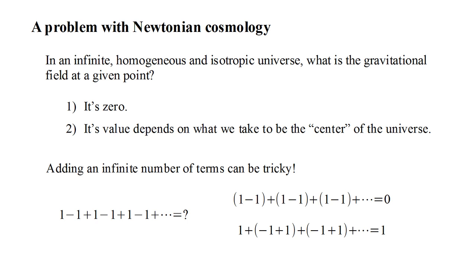Likewise, Newtonian theory does not converge on a unique answer for the gravitational field at a point in an infinite homogeneous isotropic universe. In the past, this led some physicists to suggest that Newton's law of gravitation must not be valid at very large distances. We will see that general relativity does not have this convergence problem and leads to unambiguous cosmological predictions.